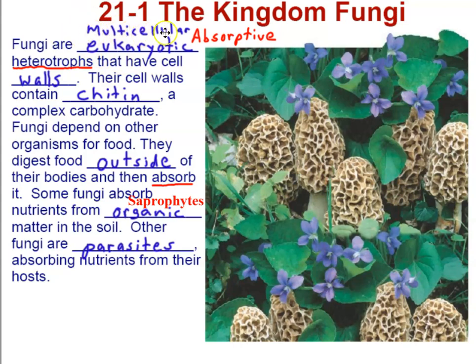You might want to add 'most' when you write down multicellular, because there are unicellular fungi — and those are the yeasts. Yeasts are the only unicellular fungi; all other fungi are considered multicellular. Also, what makes them different is they are absorptive heterotrophs — all of them. Absorptive means they digest food on the outside of their cells and then absorb the nutrients. But they're eating others, which is what makes them heterotrophs.